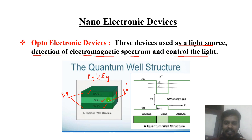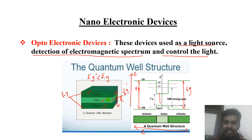The x-axis represents the length of the material and the y-axis represents the energy. The top material has energy gap EG, the bottom material also has the same energy gap EG, but the center one has energy EG prime, which is less than the top and bottom.